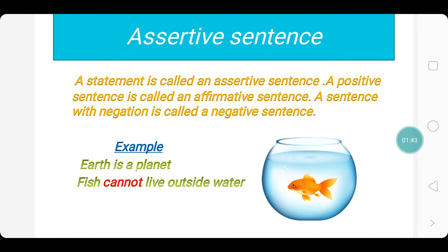Here are the examples. The first example: earth is a planet — this is an affirmative sentence and it is an assertive sentence. The second example: fish cannot live outside water — this is a negative sentence and it is also an assertive sentence.